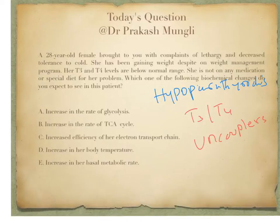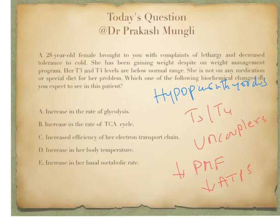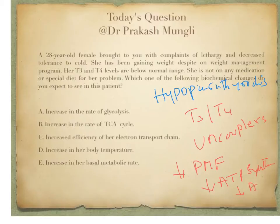During the uncoupling process, more protons are leaked from the intermembrane space into the matrix of the mitochondria. Because of this continuous leakage of protons, there will be a decrease in the proton gradient — a decrease in proton motive force. This proton gradient built in the intermembrane space is decreased when T3 and T4 are present. With a decrease in proton motive force, there will be a decrease in the activity of ATP synthase, which phosphorylates ADP with Pi to make ATP. This leads to a decrease in overall ATP synthesis.